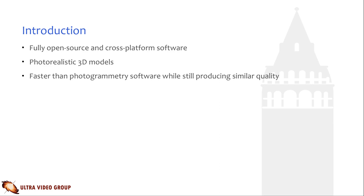Open3D Gen is a fully open source and cross-platform software for reconstructing photorealistic textured 3D models from RGB and depth images. It consists of a full end-to-end scheme for 3D reconstruction in an easy-to-use package and can be run partly in real-time. It has been proven to be significantly faster than state-of-the-art photogrammetry software, while still producing similar-looking results.